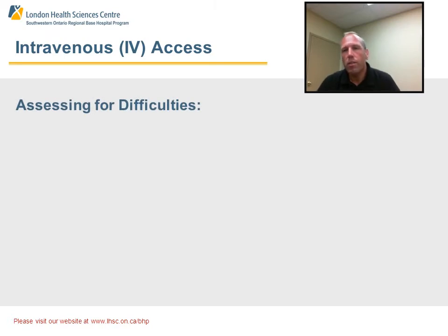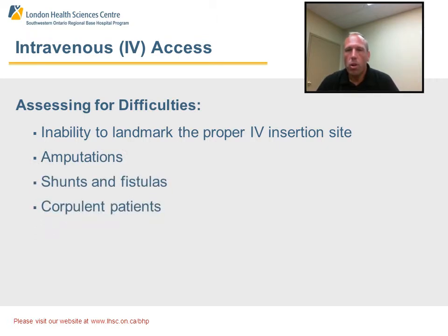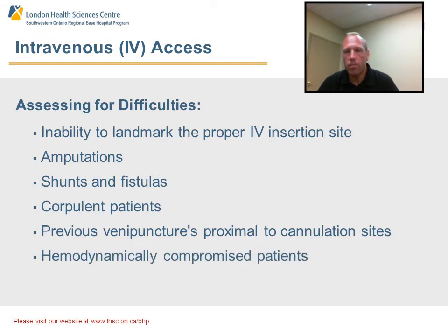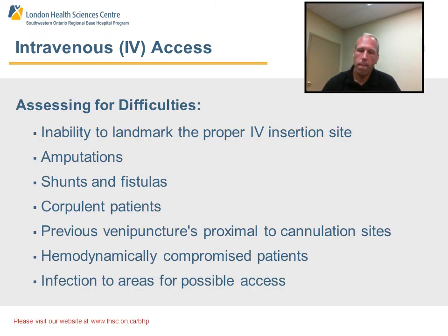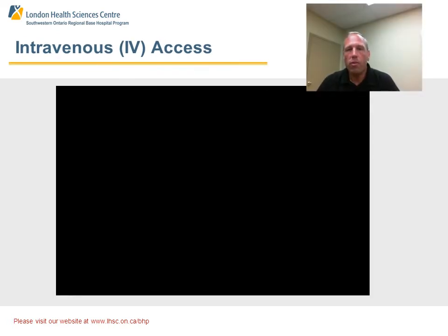Assessing for difficulties in intravenous access includes the inability to properly landmark the IV insertion site, amputations, shunts and fistulas, the corpulent patient, previous venous punctures proximal to the cannulation sites, hemodynamically compromised patients, as well as infection to the areas for possible access. Please refer to the following video on how to properly insert the intravenous catheter.